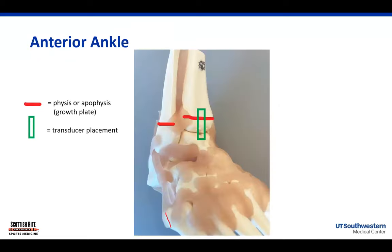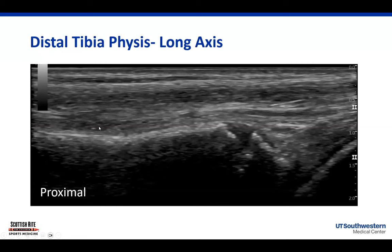Starting on the anterior ankle, I place my transducer over the anterior ankle. The green box shows transducer placement, and the red lines represent a physis or apophysis that we'll see in this skeletally immature patient. Here we have a picture of the distal tibia with a nice smooth bony cortex. At the very distal end, this is the distal tibia physis - don't mistake that for a fracture. We don't see any hematomas around it. You always have to scan medial and lateral along the entire tibia to make sure there are no breaks in the cortex or hematomas that would suggest a distal tibia fracture. We don't see any of that in our patient.